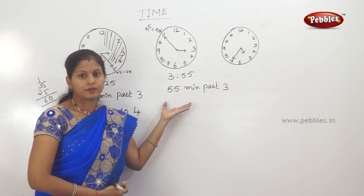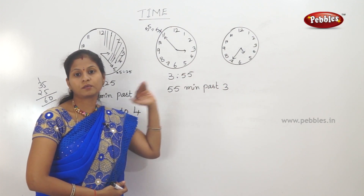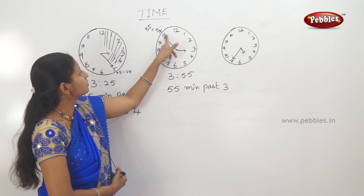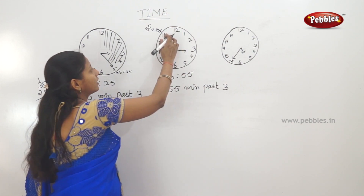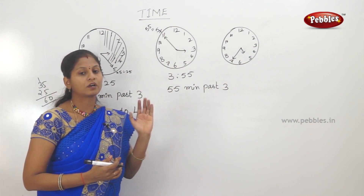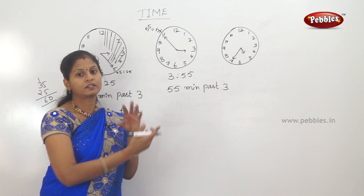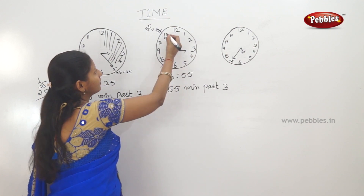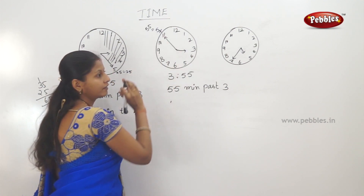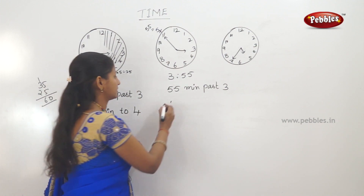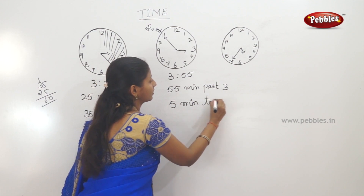You have 5 minutes to complete. When we add 3 hours, from the hour there is 4. For 4, there are no minutes. 5 small divisions are 5 minutes. So, 5 minutes to 4. 4 is 5 minutes away.